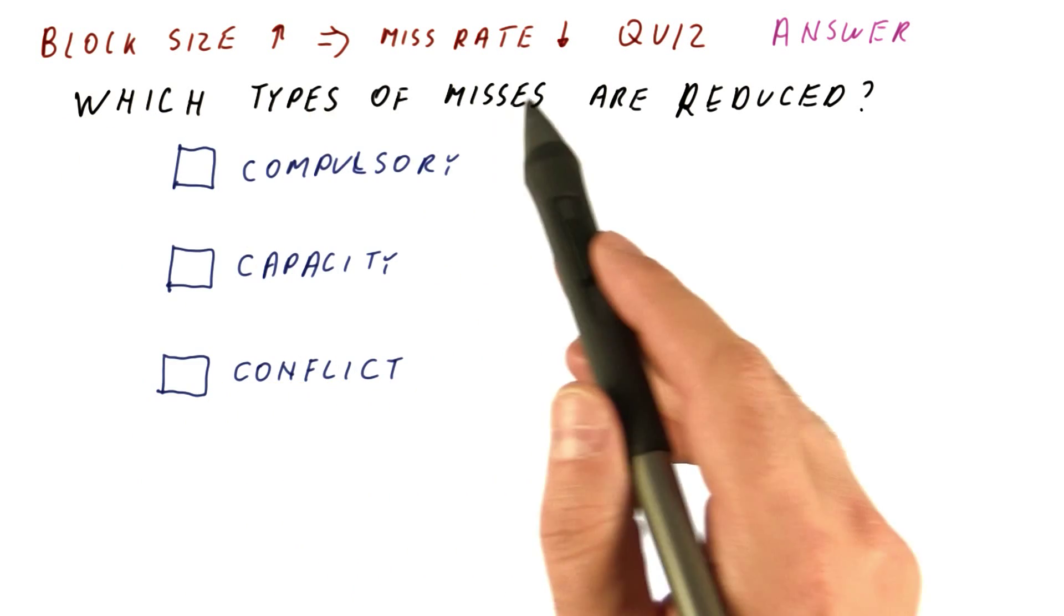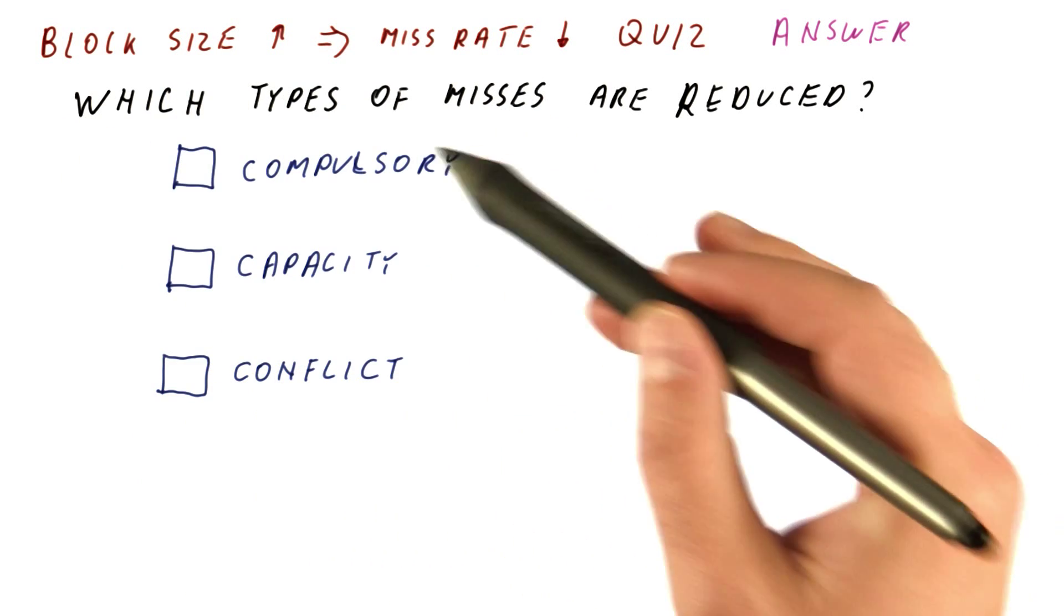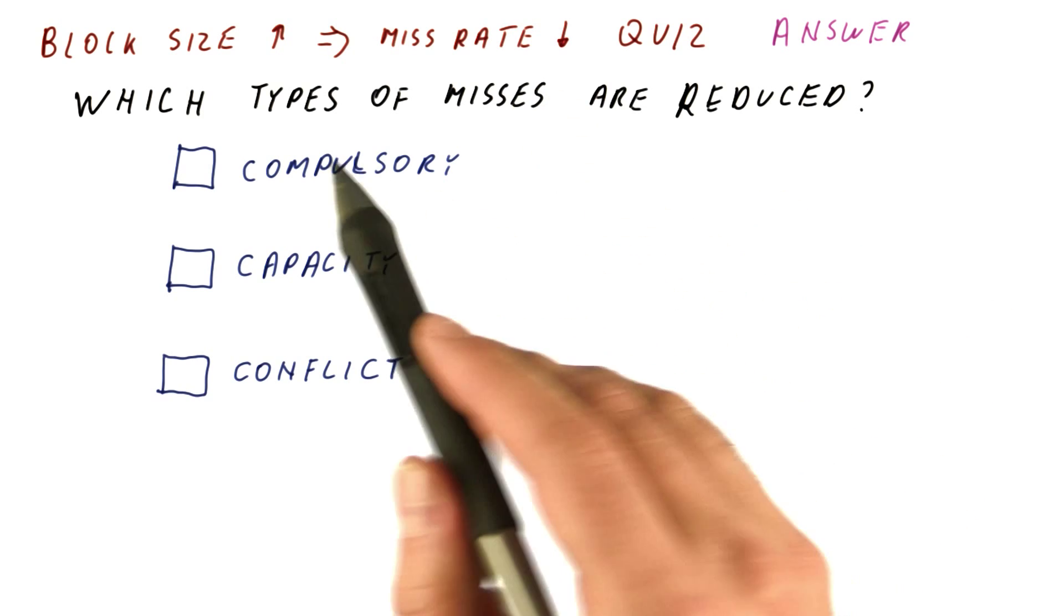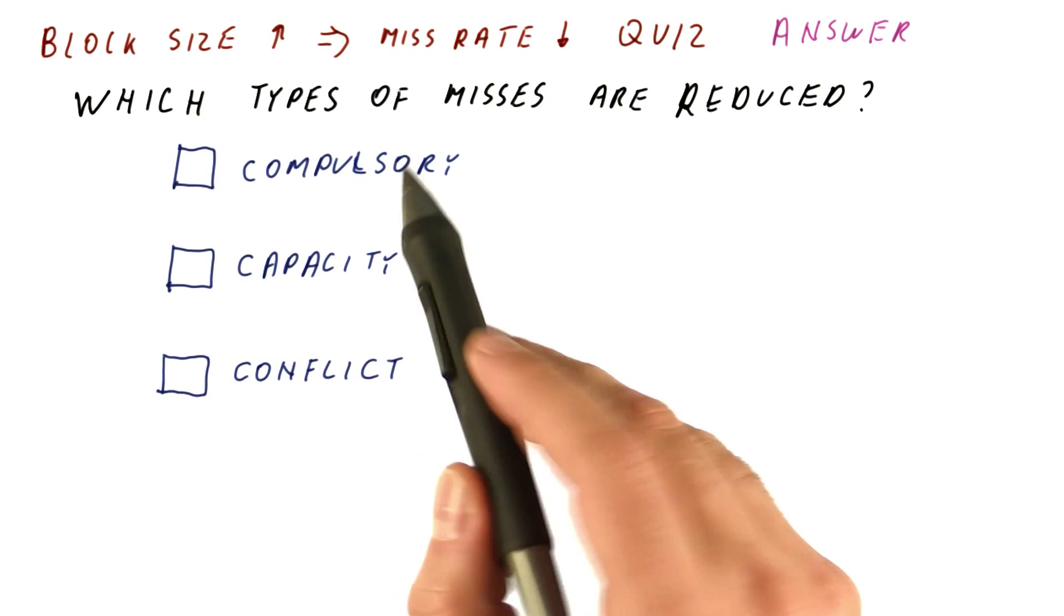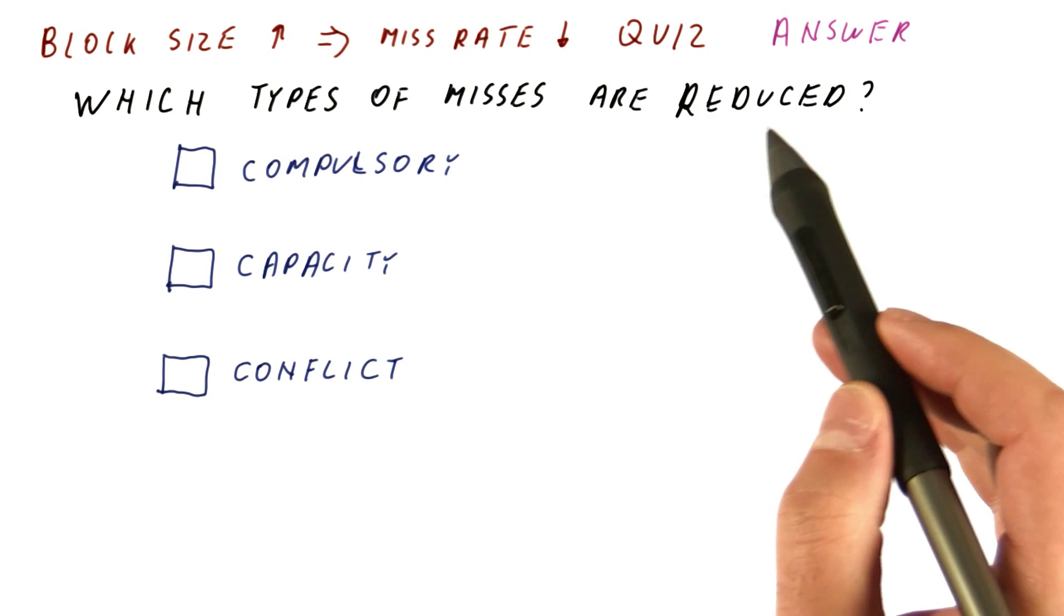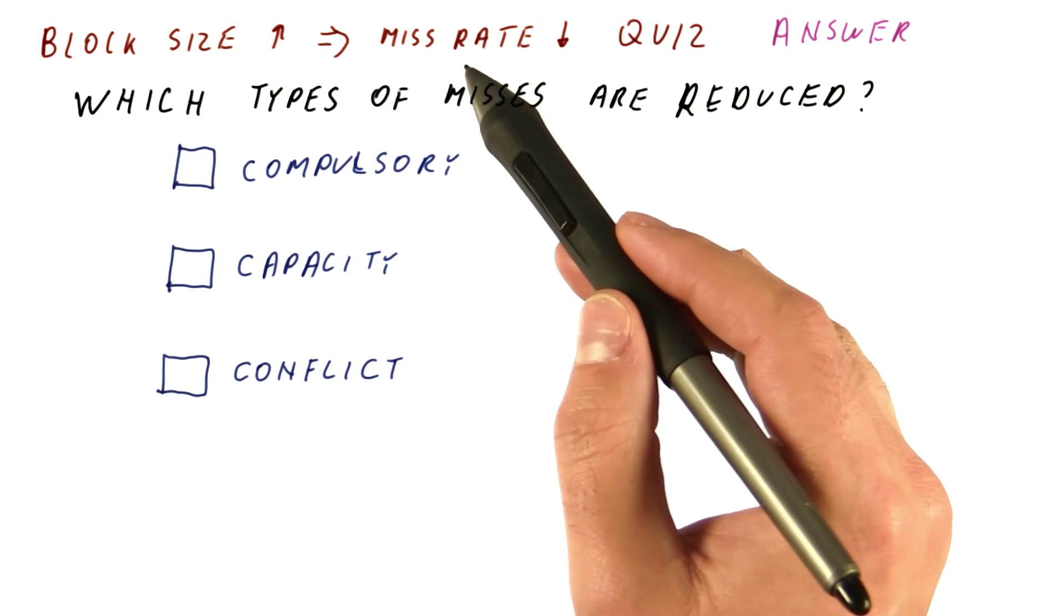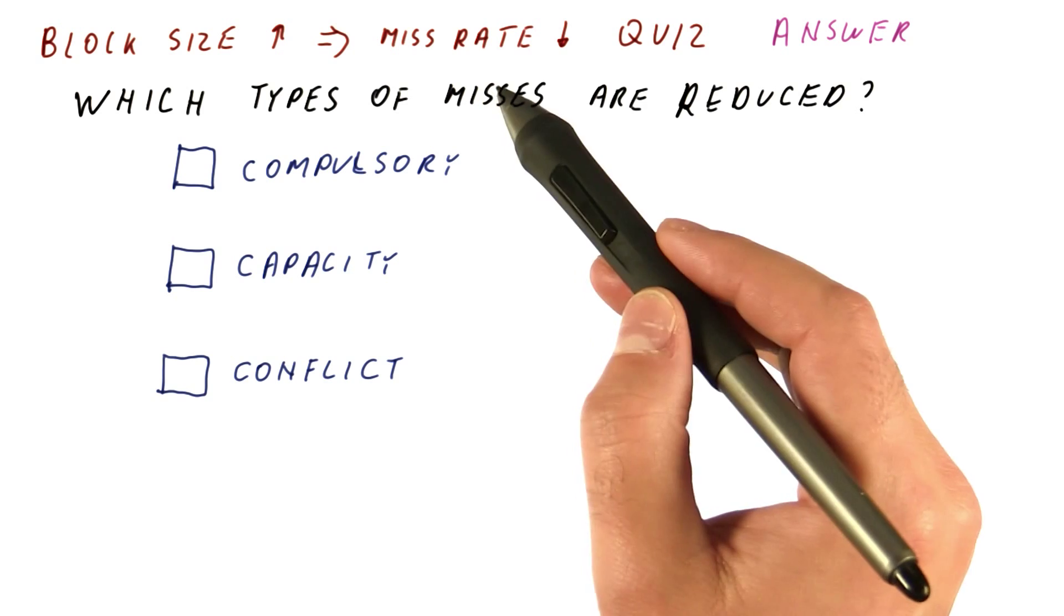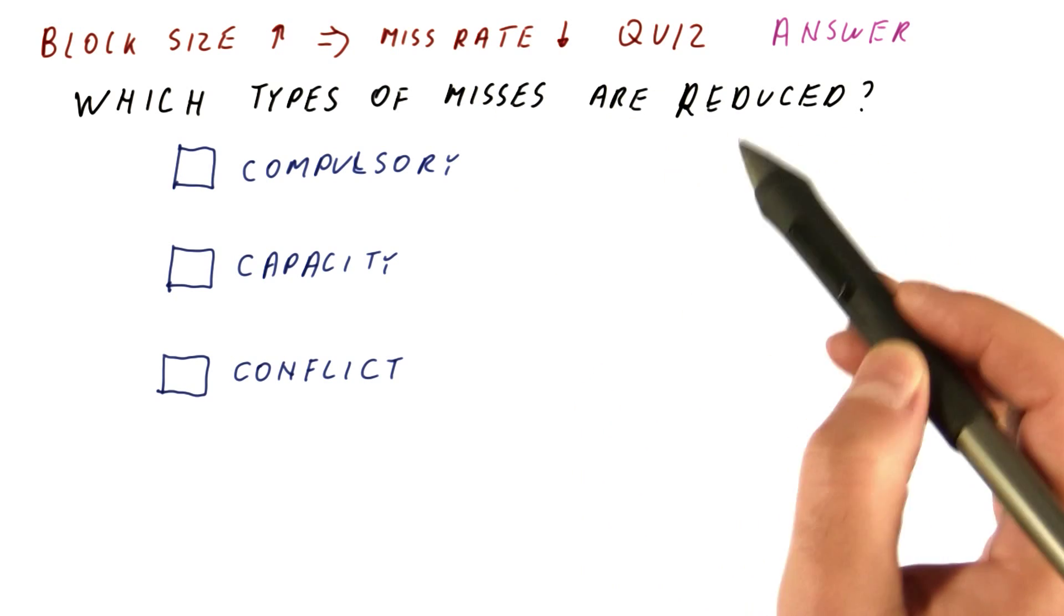Let's look at the answer to our quiz about the relationship between block size and miss rate. The question was, which of the three C's are really reduced when the miss rate goes down? Obviously, some misses have been eliminated. The question is, which type suffered the elimination?